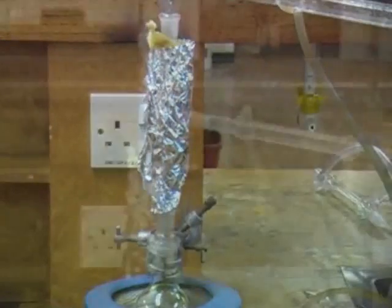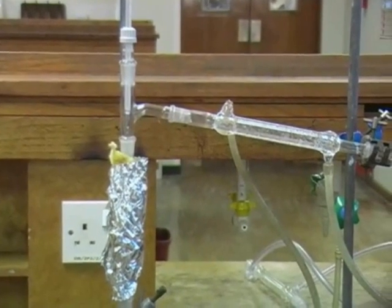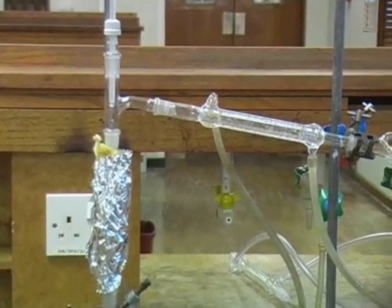Above the fractionating column we have a standard still head, and into this we've placed a thermometer which will allow us to measure the boiling points of the different liquids, or fractions as we call them.